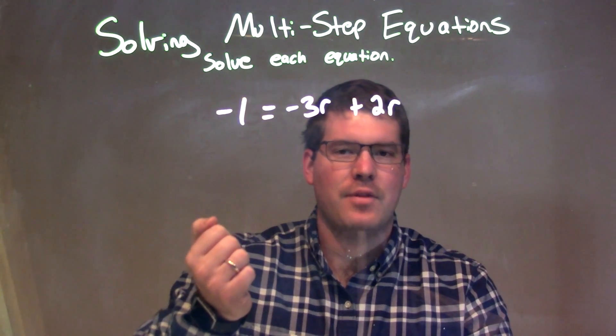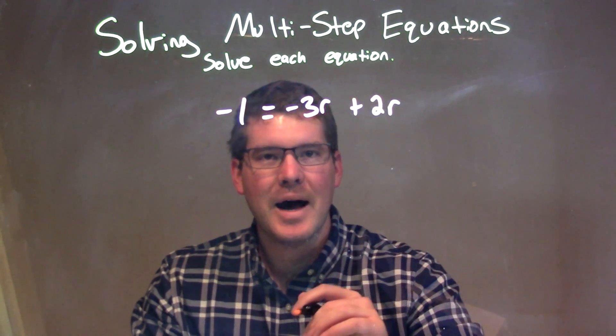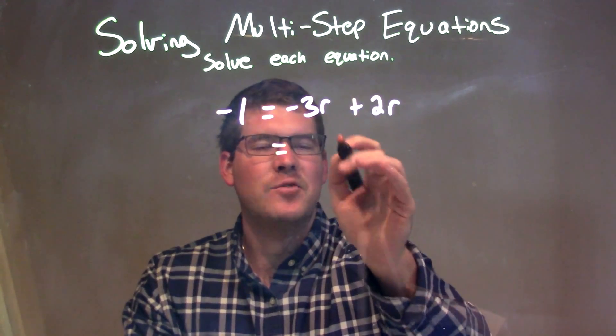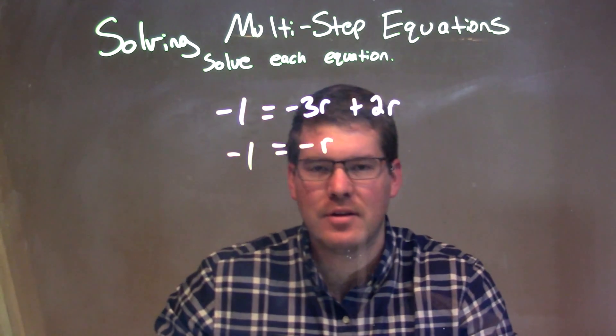Negative 1 is just by itself on the left, and my two like terms on the right are negative 3r and a positive 2r. When I combine those together, negative 3r plus 2r, that just gives me negative 1r, or negative r.